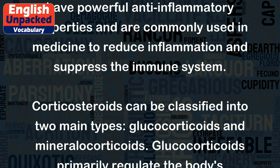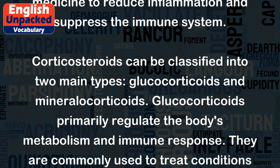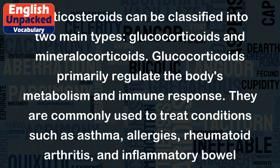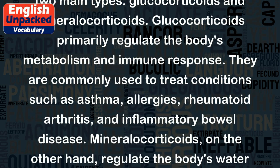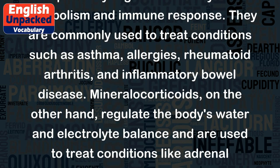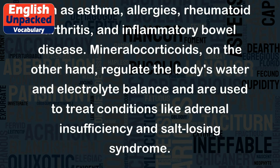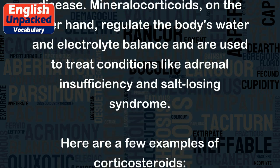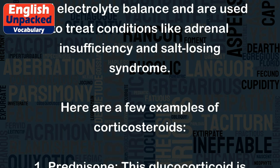Corticosteroids can be classified into two main types: glucocorticoids and mineralocorticoids. Glucocorticoids primarily regulate the body's metabolism and immune response, and are commonly used to treat conditions such as asthma, allergies, rheumatoid arthritis, and inflammatory bowel disease. Mineralocorticoids, on the other hand, regulate the body's water and electrolyte balance and are used to treat conditions like adrenal insufficiency and salt-losing syndrome.